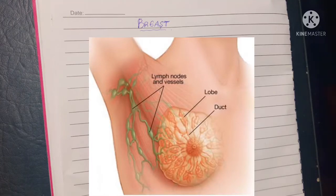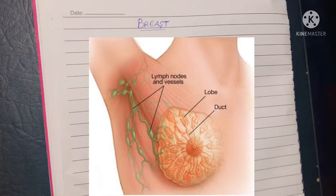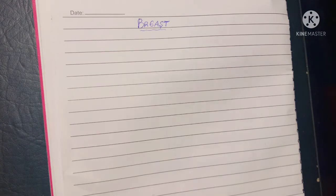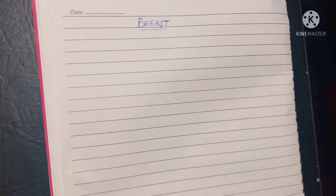We will talk about a very important part of the superficial fascia of the pectoral region called the breast, also known as the mammary gland. The breast is a modified sweat gland, basically responsible for secreting milk for the supplementation of the newborn. In females, the breast is a reproductive organ and hence more well developed; in males it is more rudimentary and not so well developed.